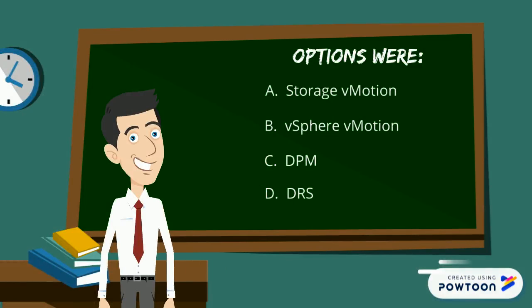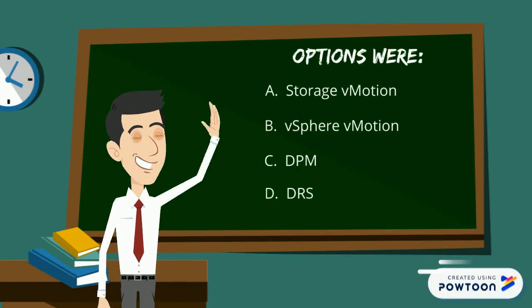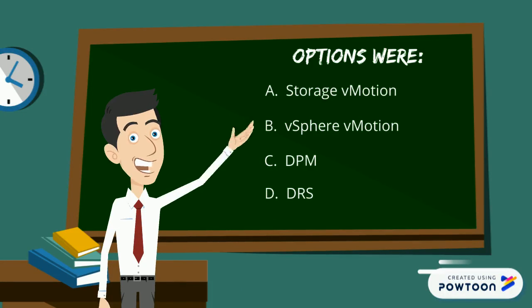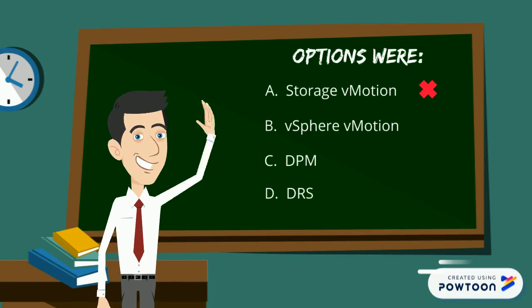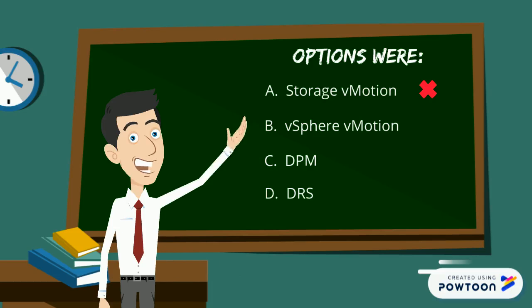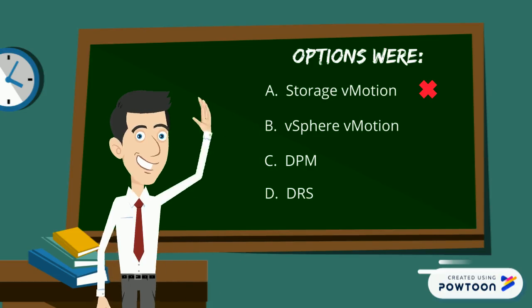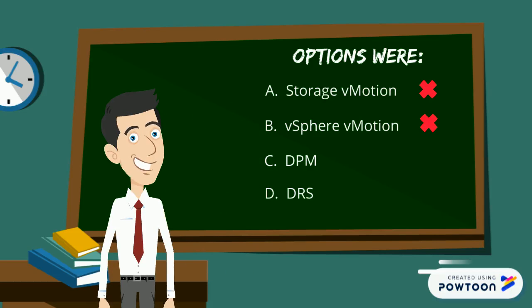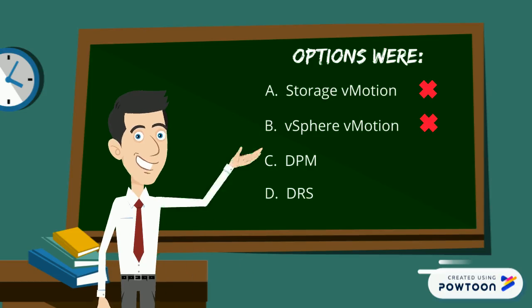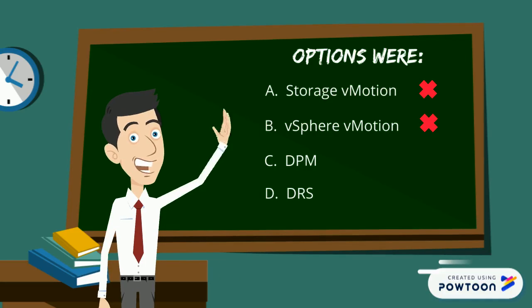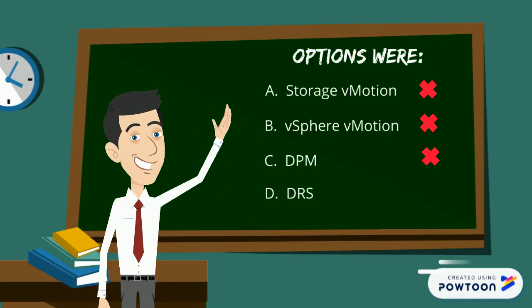Let's review the options again. Storage vMotion is used to change the underlying data store of a VM, whereas vSphere vMotion is used to change the underlying host of a VM — so these cannot be the answer. DPM is used for better power management. DRS is the only option which actually helps in distributing resources, so the answer is DRS.